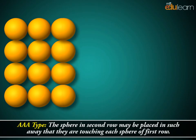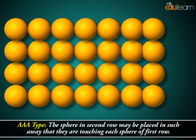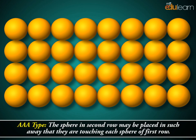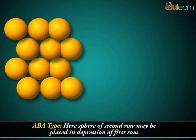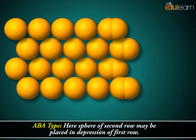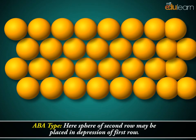AAA type: The sphere in second row may be placed in such a way that they are touching each sphere of 1st row. ABA type: Here, sphere of 2nd row may be placed in depression of 1st row.